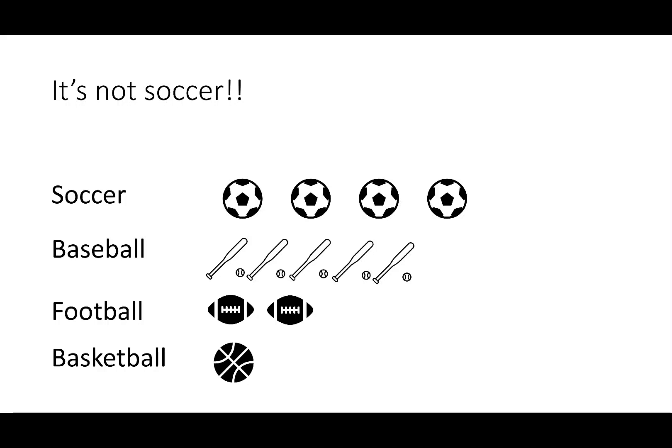At first glance we may think that soccer is the most often played sport because the soccer balls go furthest to the right. But if we stop and count the number of items in each of the rows, we see that soccer occurred four times, baseball occurred five times, football twice, and basketball once.